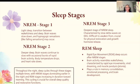NREM stage one is light sleep — the transition between wakefulness and sleep. Brain waves are slowing down and hypnagogic sensations, like that falling sensation, can occur during this stage. NREM stage two is a bit deeper: brain waves continue to slow but with occasional bursts of rapid brain activity, your body temperature drops, and your heart rate slows. NREM stage three is the deepest stage of NREM sleep, characterized by slow delta waves on an EEG. It's difficult to awaken from and is crucial for physical restoration and growth hormone release — this is when your body is repairing itself and growing.